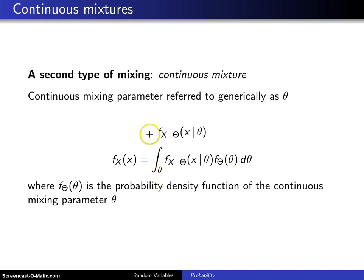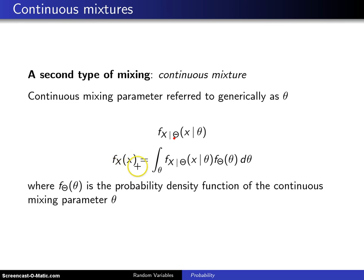Here are the component distributions: f of x given theta is the probability density function or the probability mass function of x given a particular value of theta. To get the overall probability density function of x,